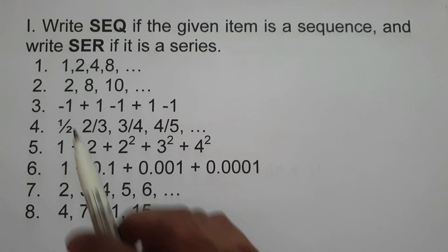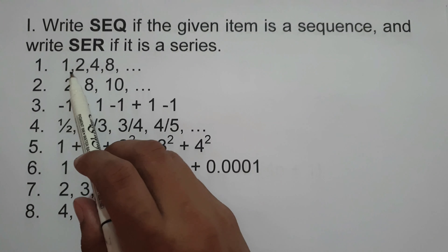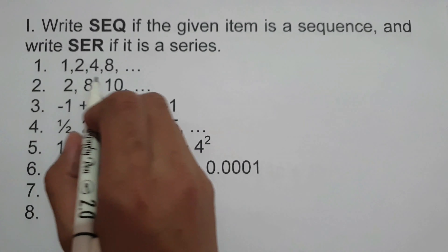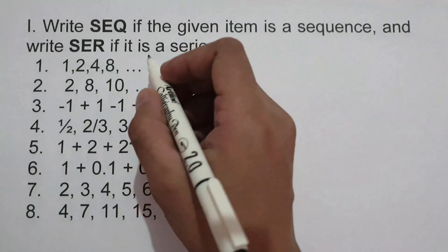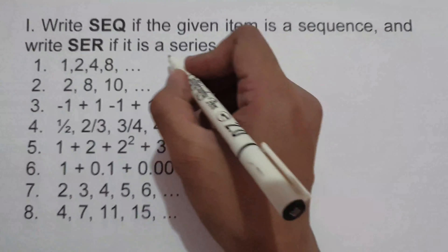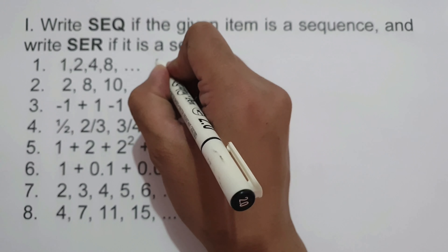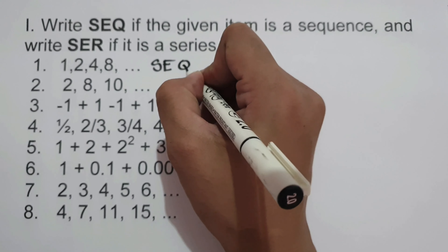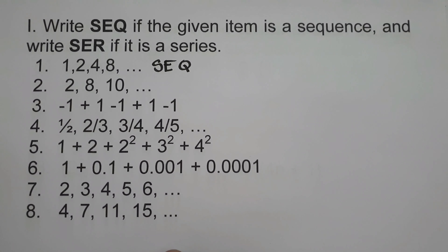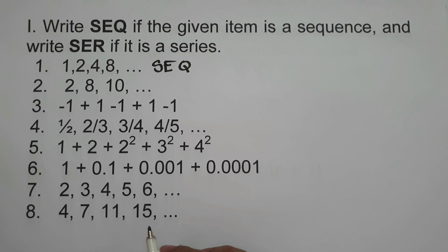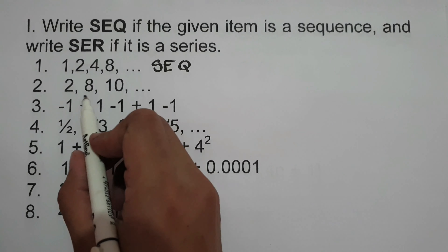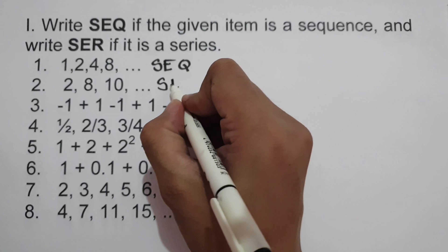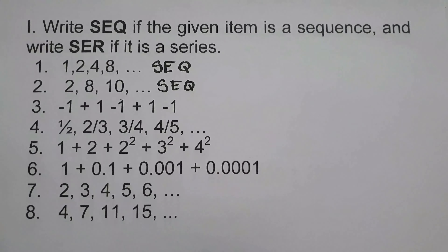Number 1: 1, 2, 4, and 8. By mere inspection, we can say it is an example of a sequence — SEQ. Number 2: 2, 8, 10. It is separated by commas, therefore it is also a sequence — SEQ.